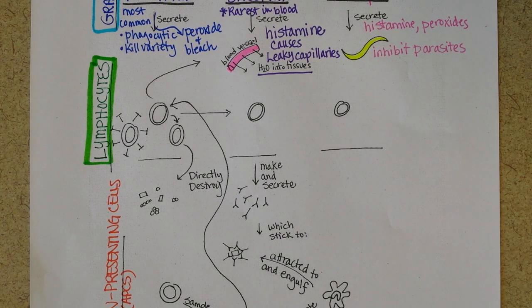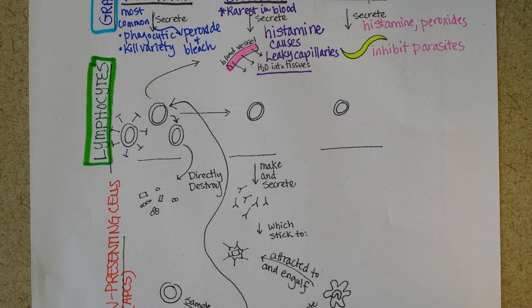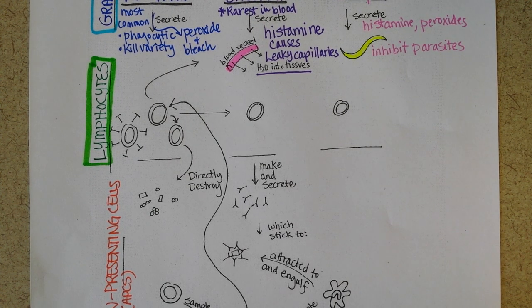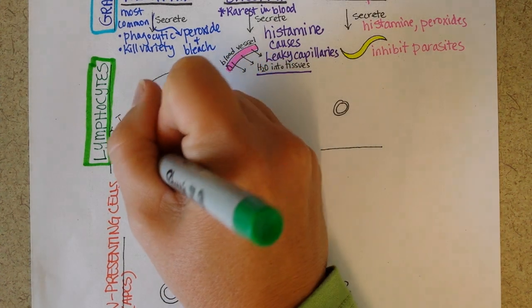It's there where they are trained, if you will, to learn to recognize specific threats in the future. And once they finish maturing, many of them remain in the lymphatic tissue and others will circulate in the blood.